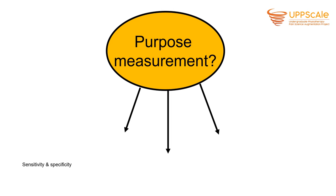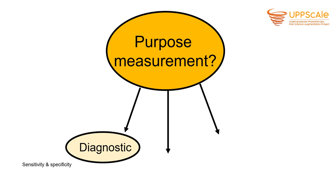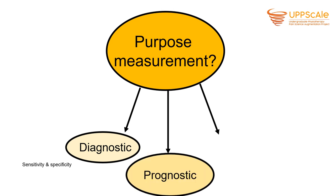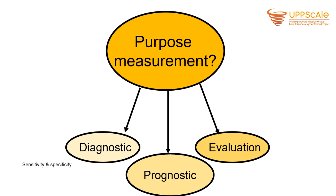You also want to think about what the purpose of your measurement is — do you want to diagnose patients, get some sense of their prognostic factors, or evaluate your treatment? Different clinometric properties are important for different purposes. For diagnostic instruments you want sensitivity and specificity, where sensitivity refers to the probability of a person with a condition of interest having a positive result, and specificity is the probability of a person without a condition having a negative result.